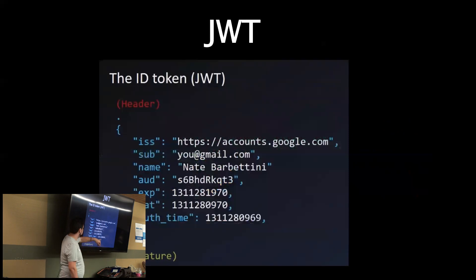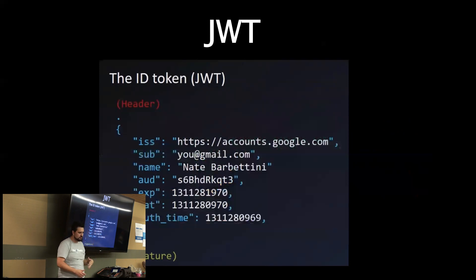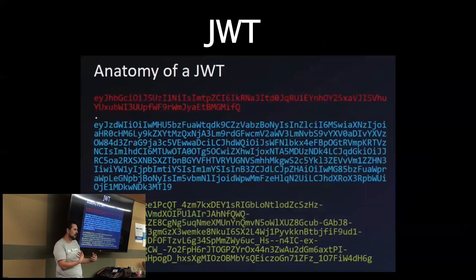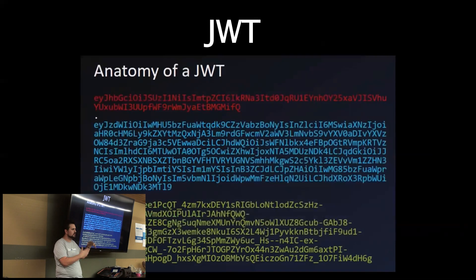A JWT token gives you context around who's the issuer, what's the sub, the name, the audience it's intended for, some expiration dates. Most importantly, it's signed. After you've been granted all these scopes and profile permissions, it wouldn't be good if you could just manipulate that token and impersonate another user to steal their data. If you tried that, it would get blocked because of the way we're signing it. In a JWT token scenario, you're signing the whole payload, and it's not something that can be tampered with based on how the signature works.